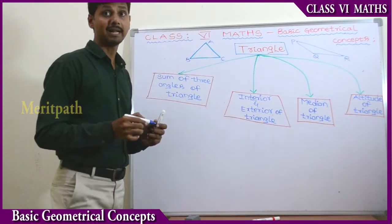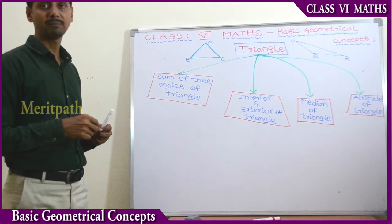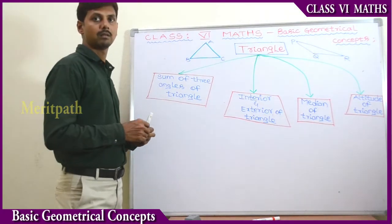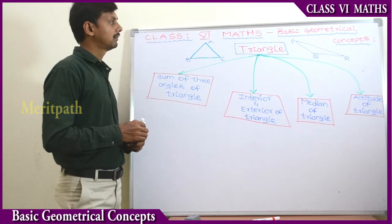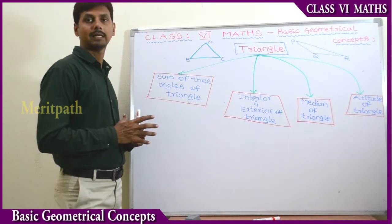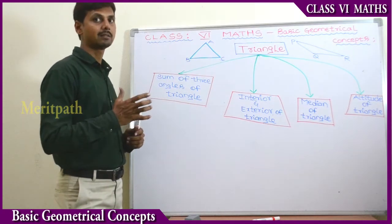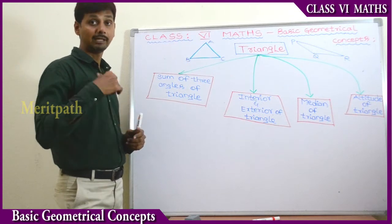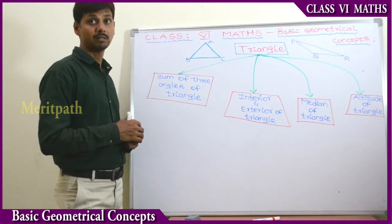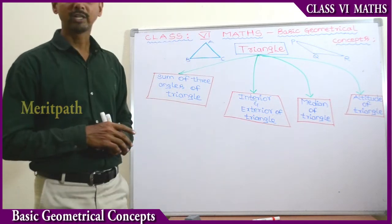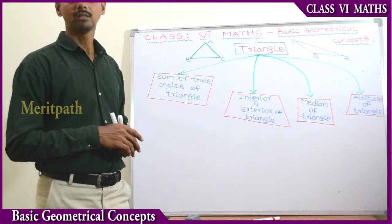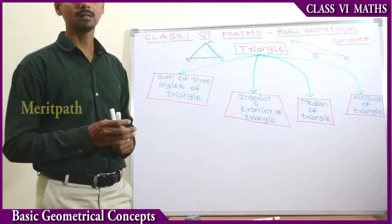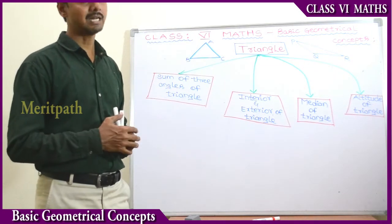So this is the triangle. We have different types of triangles, which we have learnt in the previous chapter: Acute Angle Triangle, Obtuse Angle Triangle, and Right Angle Triangle. These are the types based on angles. And according to sides, we have the Equilateral Triangle, Isosceles Triangle, and Scalene Triangle.